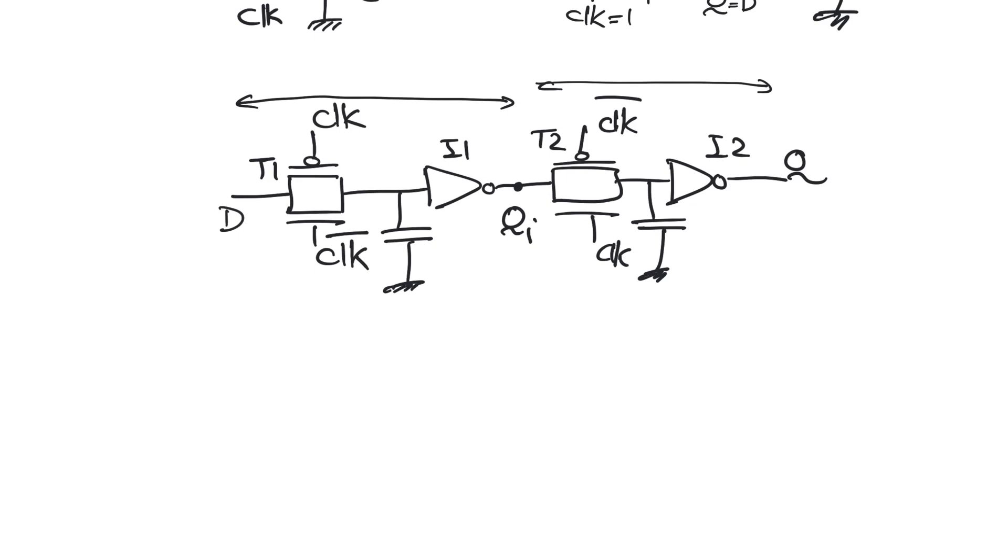If we look at this register, how is it better and how is it worse than the static register we saw in the previous video? First of all it's much smaller. The register consists of two transmission gates and two static inverters. The static register on the other hand consisted of six static inverters and four transmission gates. So this is a much more compact register.